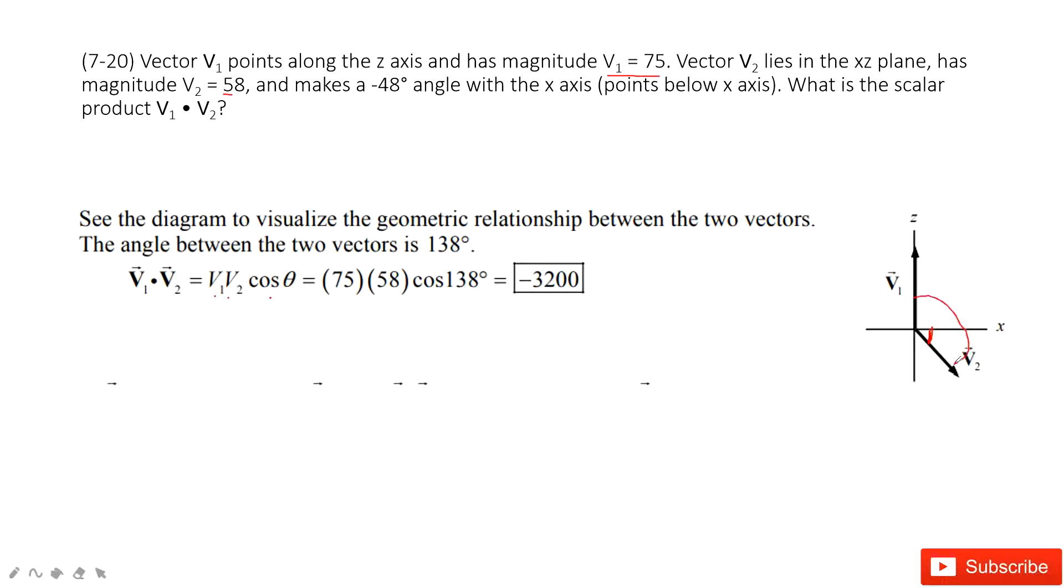We can see cosine theta is this one. Do you agree? We know this is 48, so how much for this one? Of course, this is 90 degrees. So 90 plus 48 is 138 degrees.